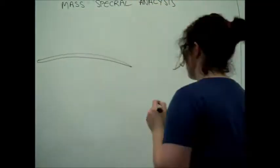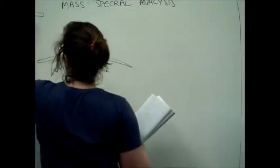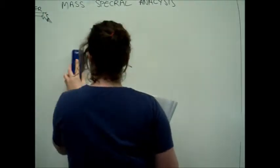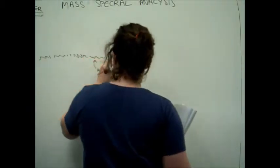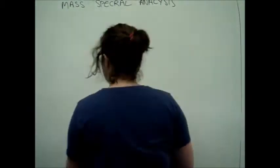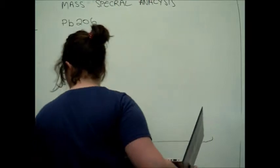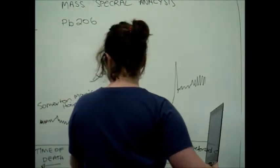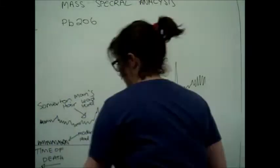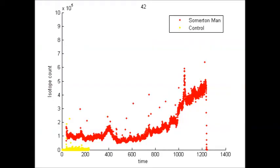So we looked at other methods to try and find out the identity of the Somerton man. We did a mass spectral analysis on one of the man's hairs to see if we could gain any clues of his environment in the weeks leading up to his death. The data we gained still requires further analysis, but we were able to find out that the amount of lead in his hair actually decreased towards the time of death.